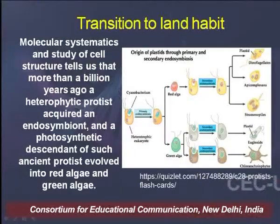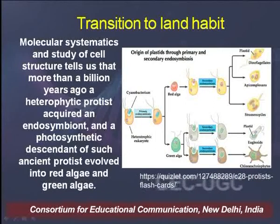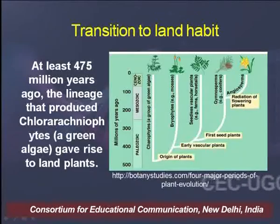Archigoniates were the first land dwellers of the plant world. Molecular systematics and study of cell structure tells us that more than a billion years ago, a heterotrophic protist acquired an endosymbiont and a photosynthetic descendant of such ancient protist evolved into red alga and green alga.